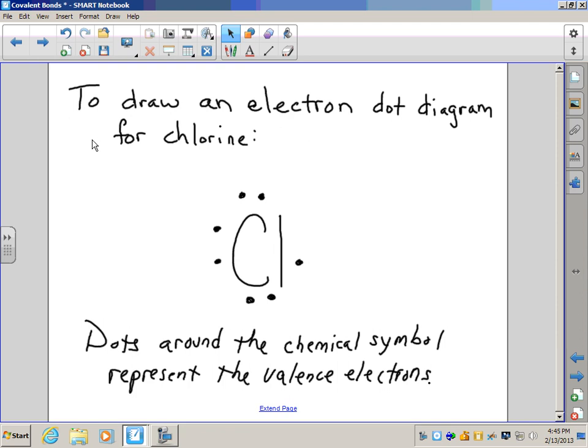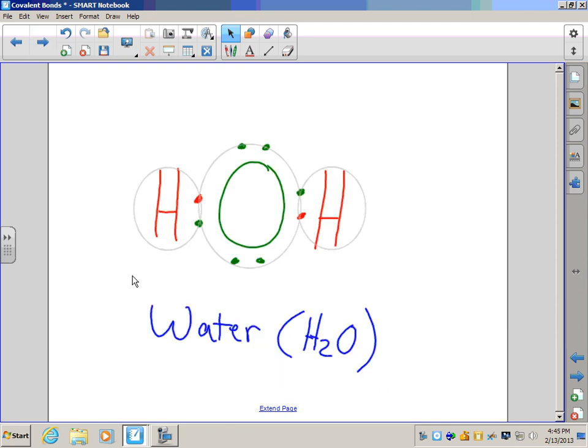It also makes drawing molecules much easier. For example, here's an H2O molecule. Instead of having to draw all those electrons in oxygen, we just draw the element symbol for oxygen, O, and its six valence electrons represented in green here, and the two hydrogens with the single electron they have. You can see how they share, oxygen's happy with eight, each hydrogen's happy with two, and we have a covalently bonded water molecule.